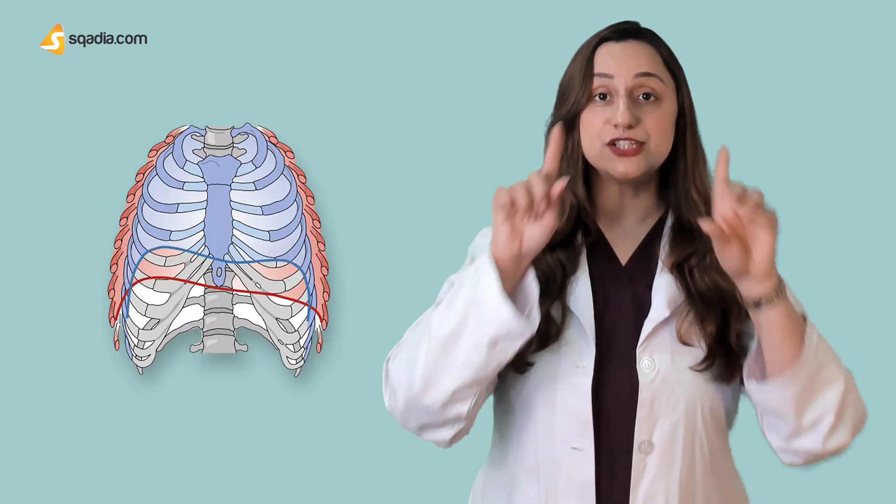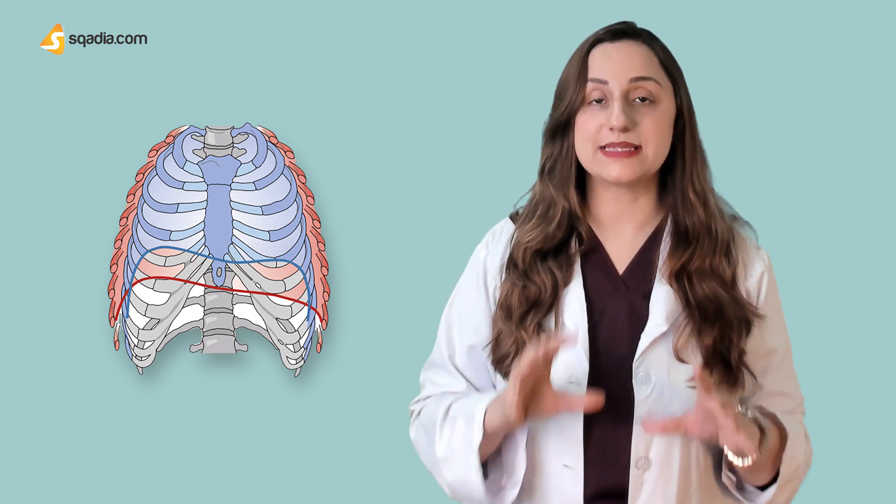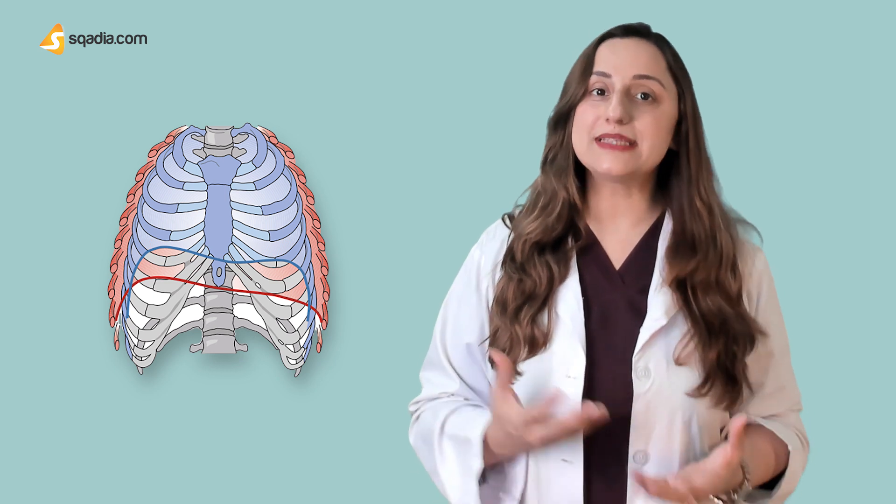The diaphragm is a parachute-shaped muscle connecting to the lower six ribs as well as the thoracic spine. This is the muscle that allows us to breathe, talk and sing. It separates the vital organs inside the ribcage from the rest of the internal organs in the abdomen.